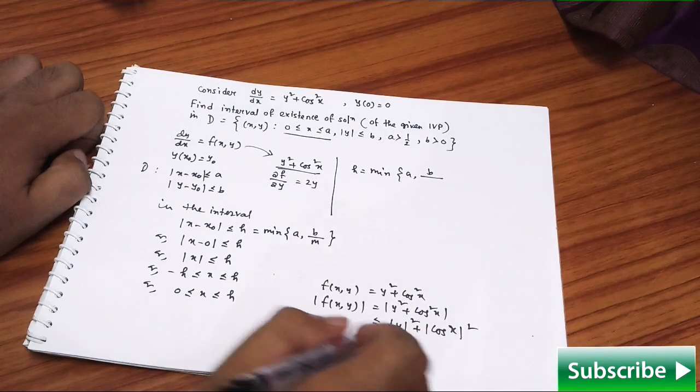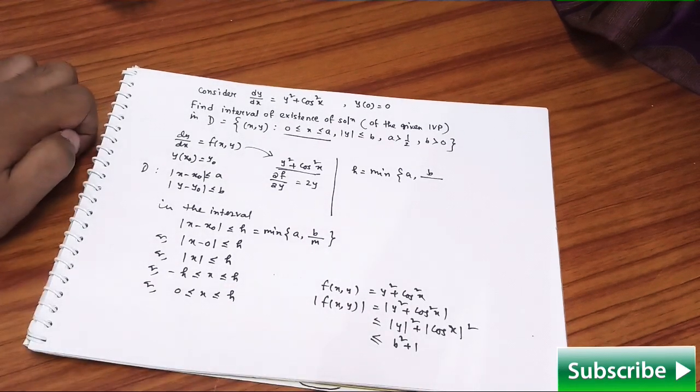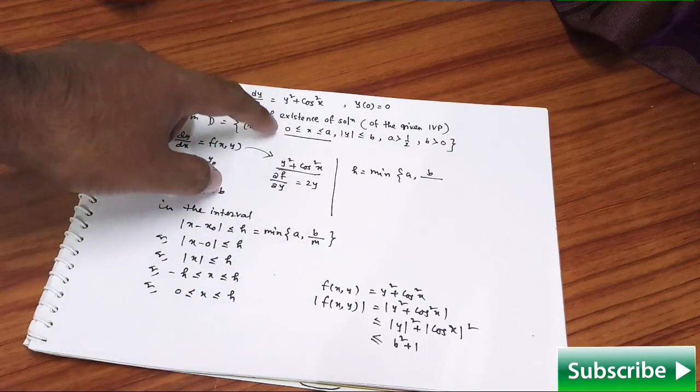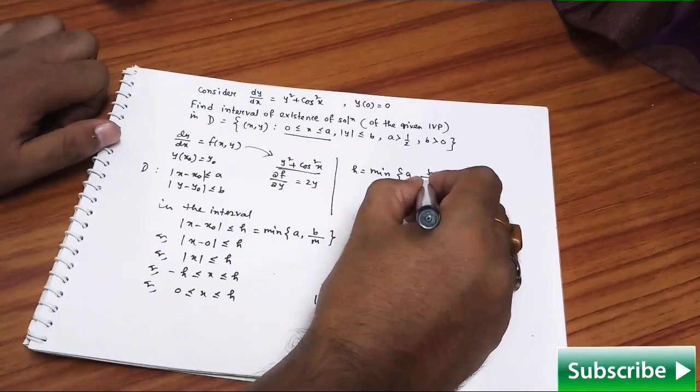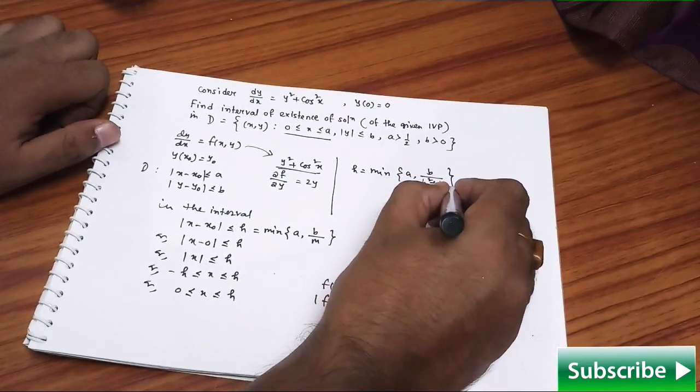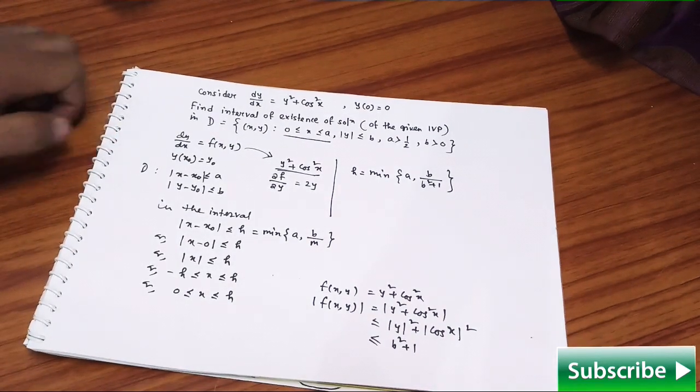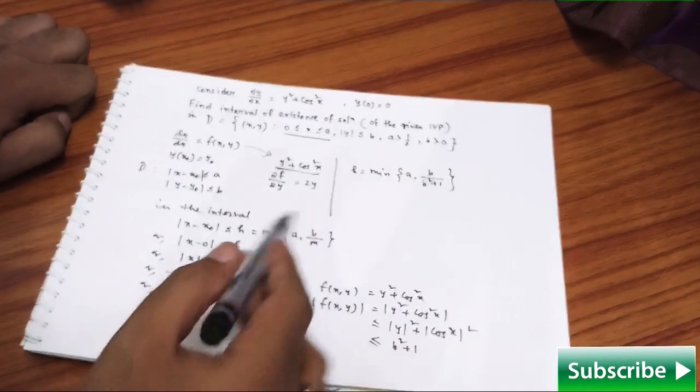You have this in your hand, and it is given in the question that |y| ≤ b, so you can use it here. And |cos x| is obviously less than 1, so immediately you will get b² + 1. Obviously it can be less or equal, so the maximum value of f in that given domain is going to be b² + 1. So m is going to be b² + 1. Now your next job is to check the minimum of these two quantities.